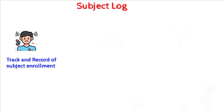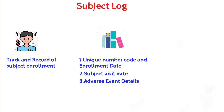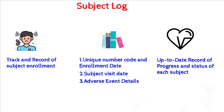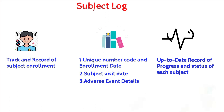The Subject Log, also known as the Subject Tracking Log, is a document used in clinical trials to keep track of the enrollment and participation of individual study subjects. It typically includes the name and unique identification number of each subject, date of enrollment, study visits completed and their dates, any adverse events experienced and their dates, and the status of each subject — whether active, completed or withdrawn. The subject log provides a centralized, up-to-date record of each subject's progress and helps ensure appropriate care and timely reporting of adverse events to regulatory authorities.